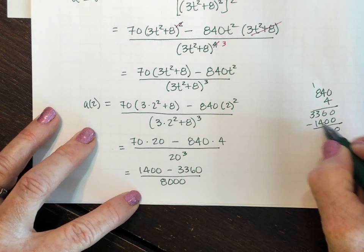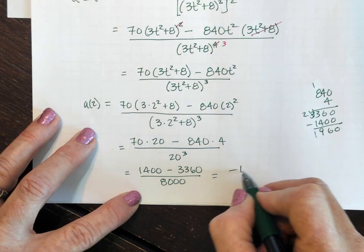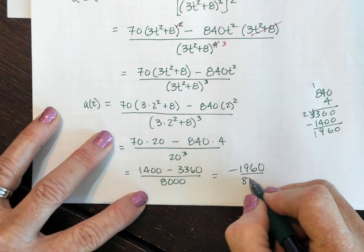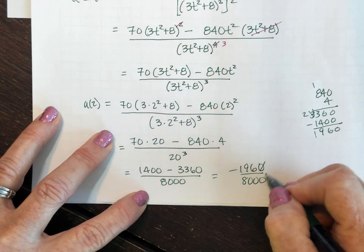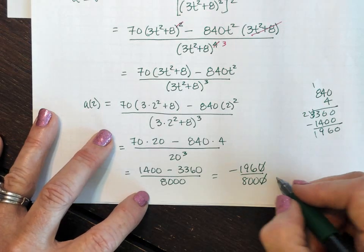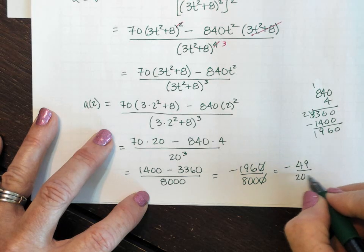That's 1400 minus 3360 over 8000. 3360 minus 1400 is 1960, so this is negative 1960 over 8000. Zeros divide out and we can divide by 4, which takes us down to negative 49 over 200.